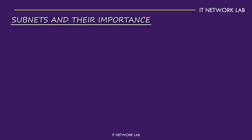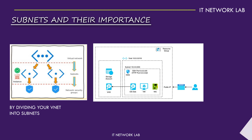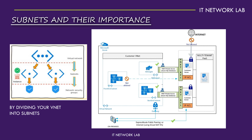Subnets play a pivotal role in Azure networking. By dividing your VNet into subnets, you can isolate different parts of your application and control traffic flow more precisely. For example, you might have one subnet for your web servers and another for your databases. This separation helps improve security and performance. Each subnet can have its own security policies, ensuring that only authorised traffic can access sensitive parts of your application.